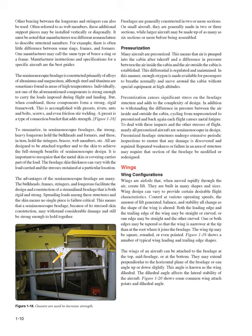This is accomplished with gussets, rivets, nuts and bolts, and even friction stir welding. A gusset is a type of connection bracket that adds strength. To summarize, in semi-monocoque fuselages, the strong, heavy longerons hold the bulkheads and formers, and these in turn hold the stringers, braces, web members, etc. All are designed to be attached together into the skin to achieve the full-strength benefits of semi-monocoque design. It is important to recognize that the metal skin or covering carries part of the load. The fuselage skin thickness can vary with the load carried and the stresses sustained at a particular location. The advantages of the semi-monocoque fuselage are many. The bulkheads, frames, stringers, and longerons facilitate the design and construction of a streamlined fuselage that is both rigid and strong. Spreading loads among these structures and the skin means no single piece is failure critical, so a semi-monocoque fuselage may withstand considerable damage and still be strong enough to hold together.